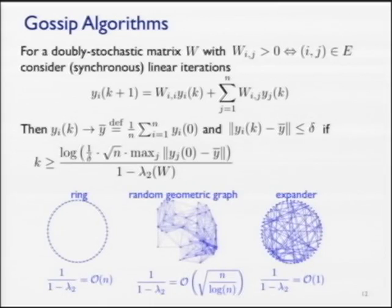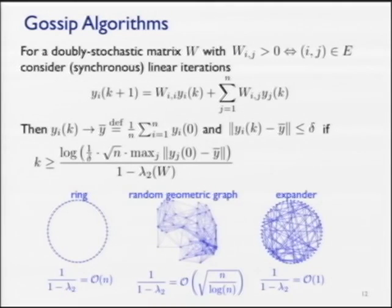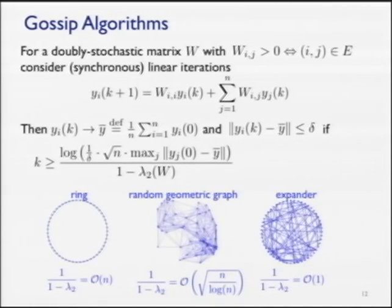This spectral gap term encodes the graph structure. For a ring graph, the spectral gap is on the order of 1/N — it takes a long time for information to diffuse. For intermediate graphs like a 2D grid or random geometric graph, it's order sqrt(N) or sqrt(N/log N). For a complete graph or expander graph, the inverse spectral gap is O(1) regardless of network size — the most interesting case if you can design your network.